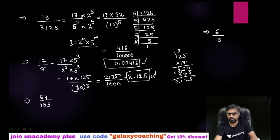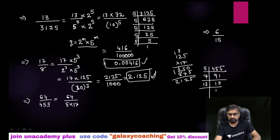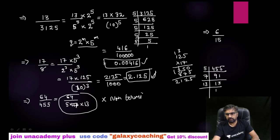Now let me find the factors of 455. We get 5 multiplied by 7 multiplied by 13. Since we are getting factors other than 2 and 5, we can directly say the answer will be non-terminating. So we cannot find the decimal form of 64 over 455.